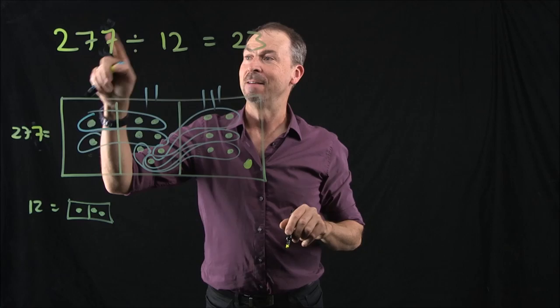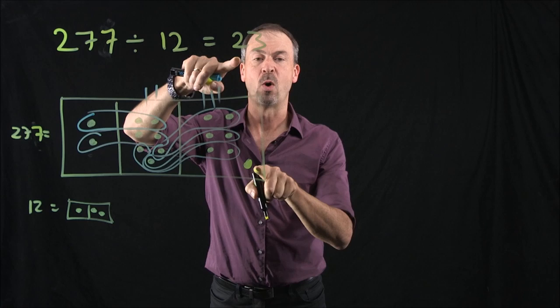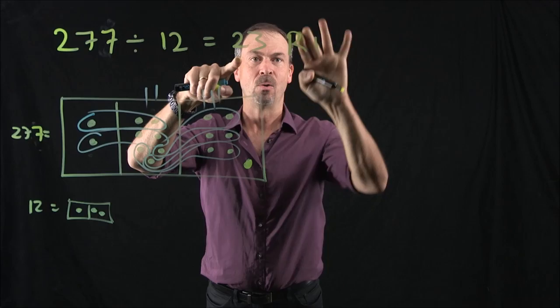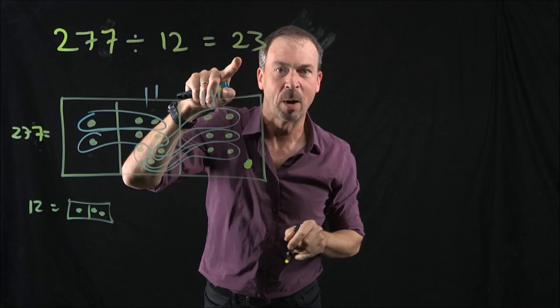Well, we have to say then that 277 divided by 12 is 23, yep, two groups and three groups, with one extra remaining dot. Well, depending on what grade level you're in, you might write remainder 1, or in some countries you might write dot dot dot 1.